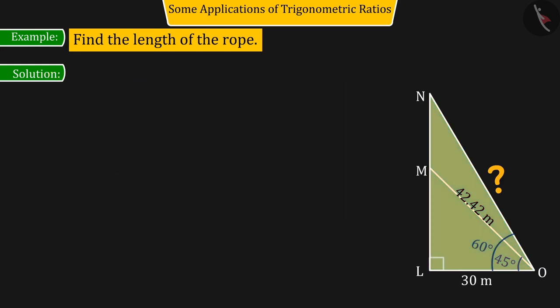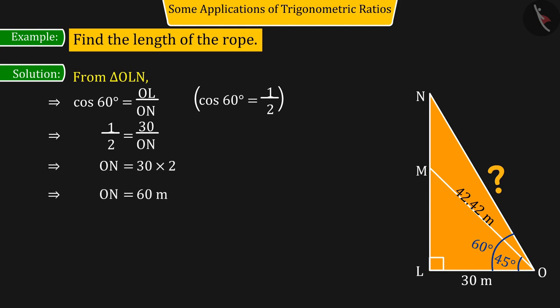Similarly, he also discusses about the right angle triangle O, L, N. And by getting the trigonometric ratio cos 60 degrees equals OL divided by ON. And on substituting and solving their values, the value of ON is 60 meters.